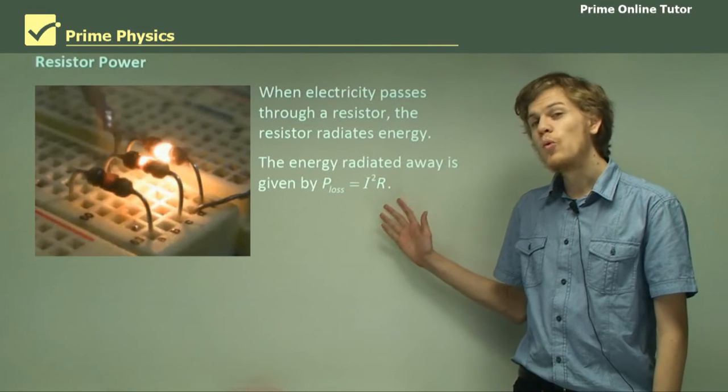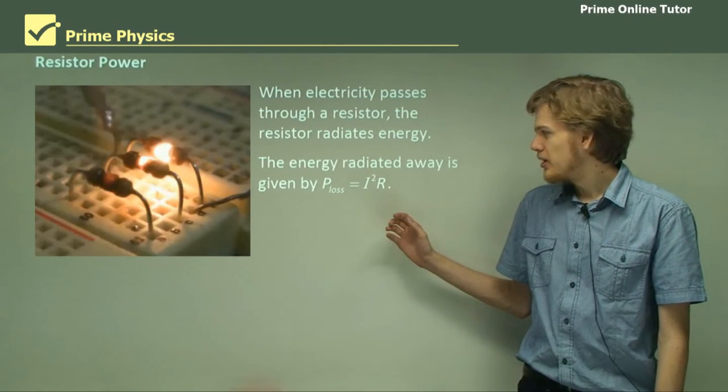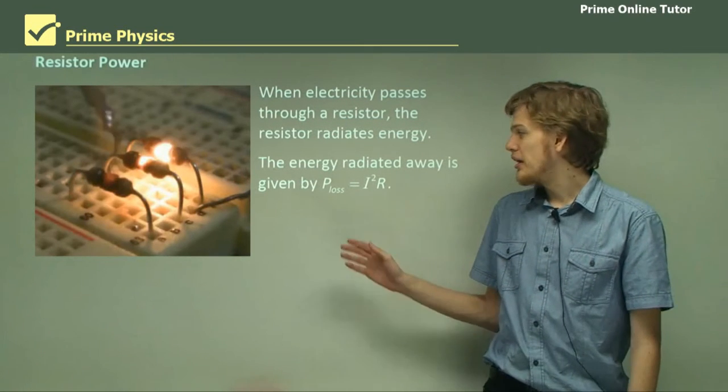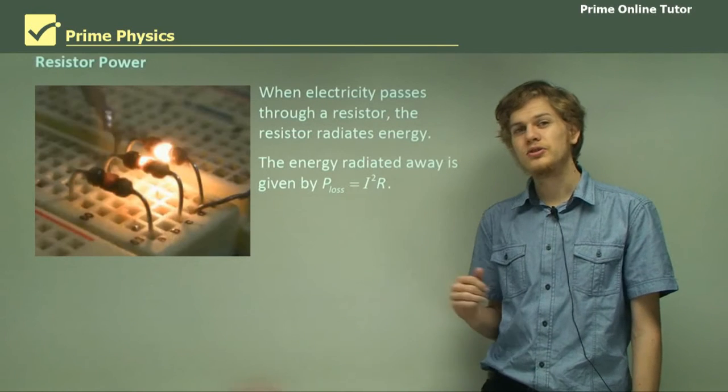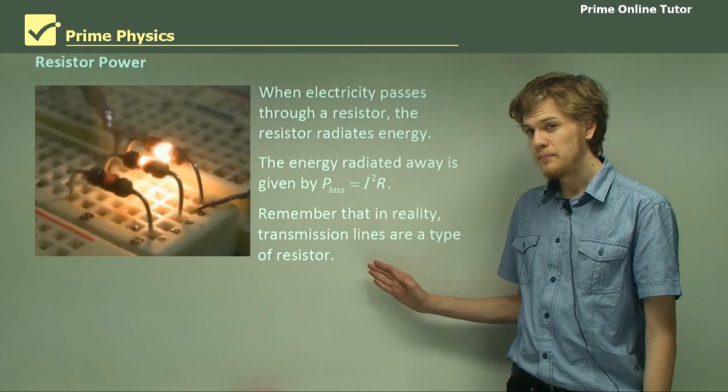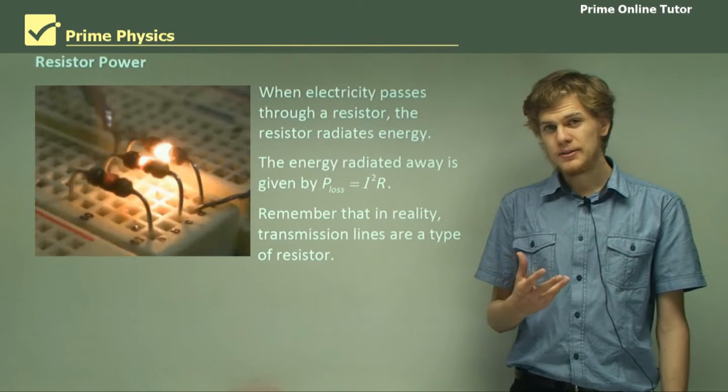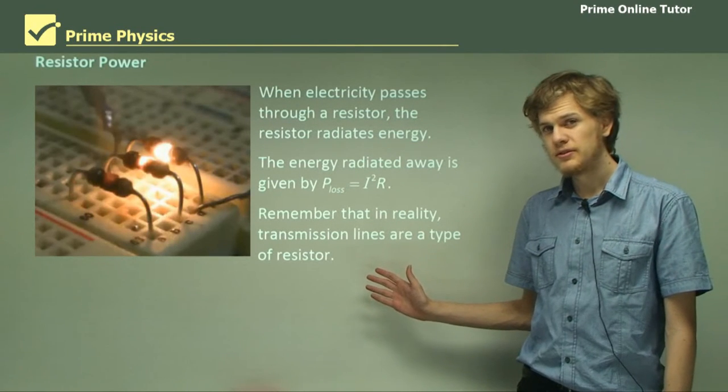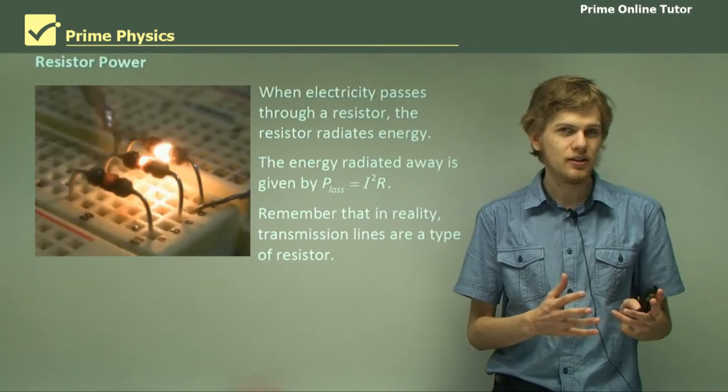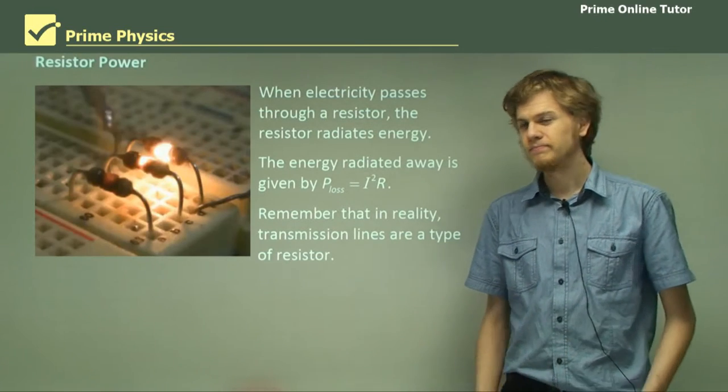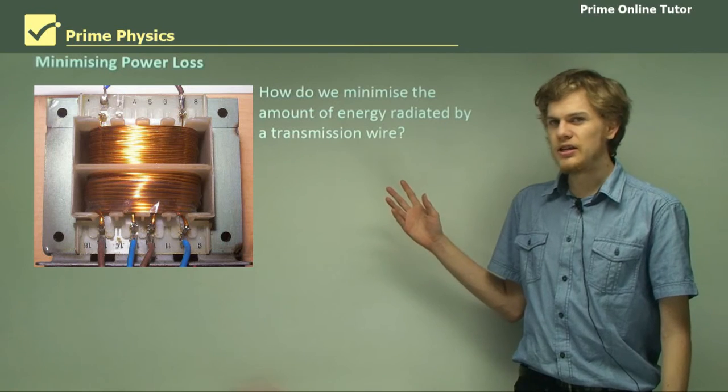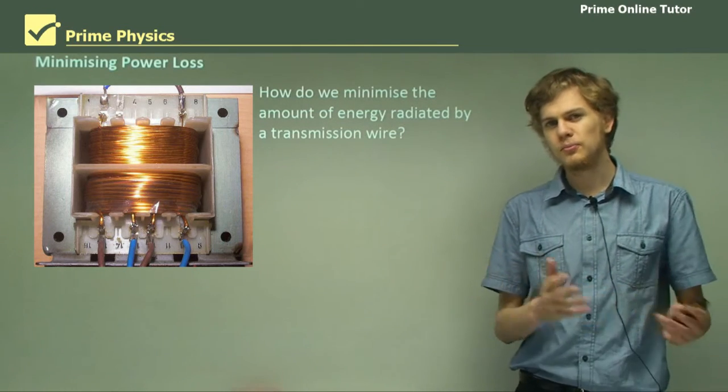So the energy radiated away by a resistor is given by power loss equals I squared R, where I is the electric current and R is the resistance. Now remember that in reality even electric wires count as resistors. Often in physics we'll assume that the wires don't have resistance. In real life of course that's not the case.